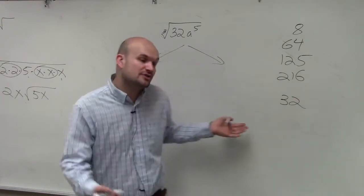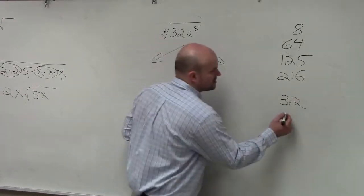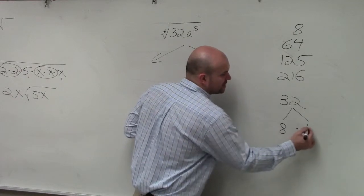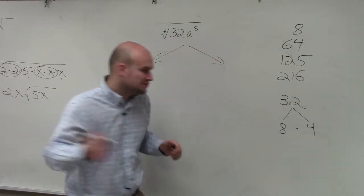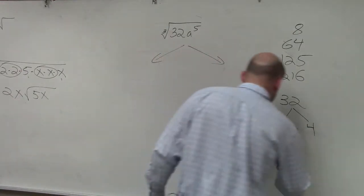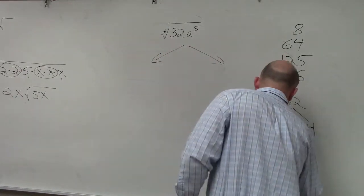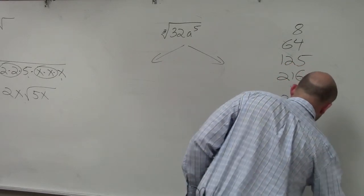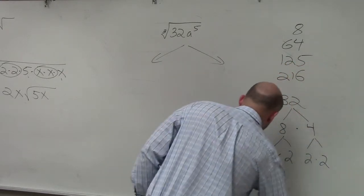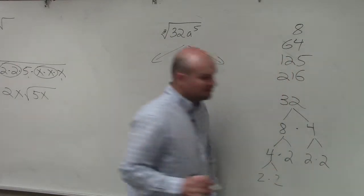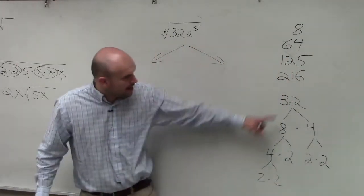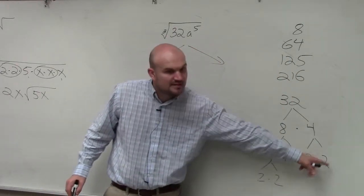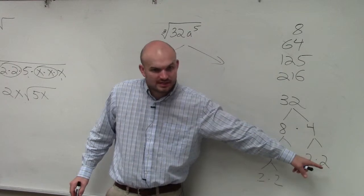So therefore, there are two different ways you can do it. One way is to break this down using prime factorization. Do you guys see how 32 I broke down into 2 times 2 times 2 times 2 times 2? Do you guys see that?